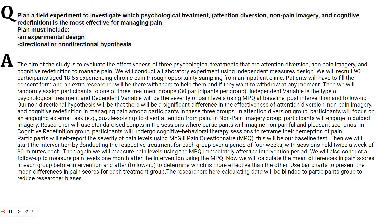Participants will self-report the severity of pain levels using the McGill Pain Questionnaire — this will be our baseline test. Then we will start the intervention by conducting the respective treatment for each group over a period of four weeks, with sessions twice a week of 30 minutes each.